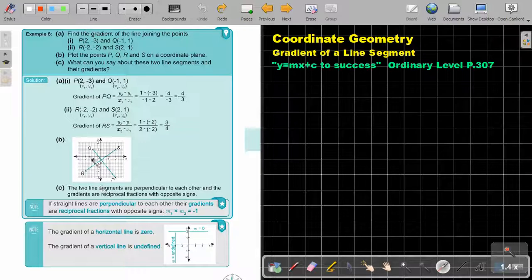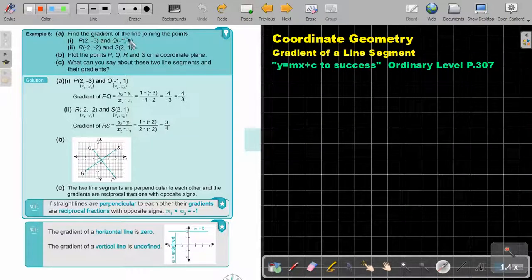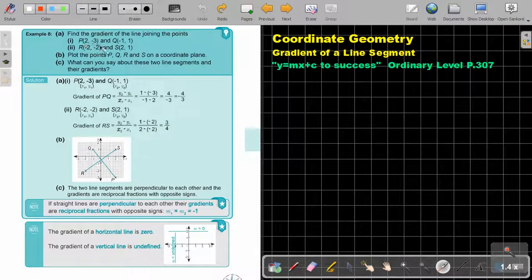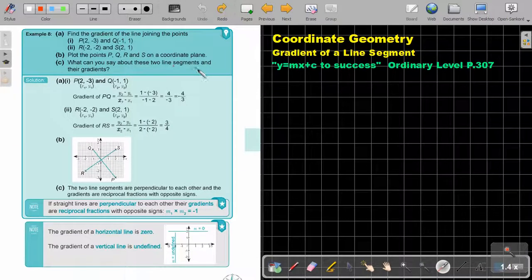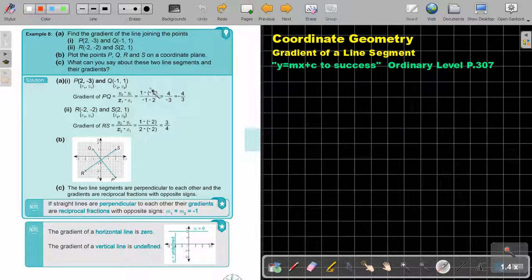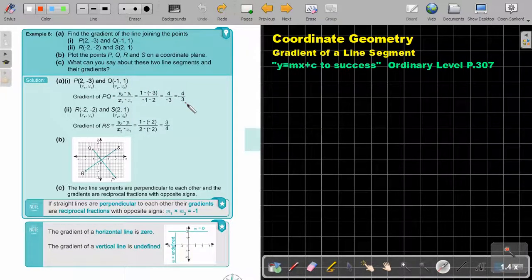Let's look at another example. Find the gradient of the line joining the points PQRS. Plot the points almost like the previous video. What can you say about these two line segments and their gradients? Remember the gradient formula. I do substitution. I find negative 4 over 3.